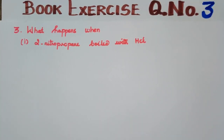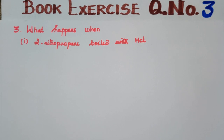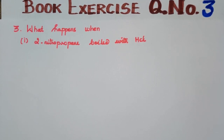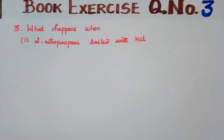Question number 3 has 4 subdivisions. The first question asks what happens when 2-nitropropane is boiled with HCl. We will identify the reactant and the reaction being carried out, and we will solve for the compound 2-nitropropane.